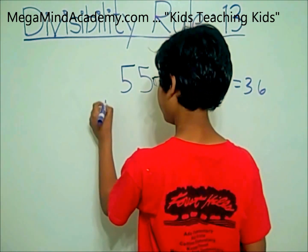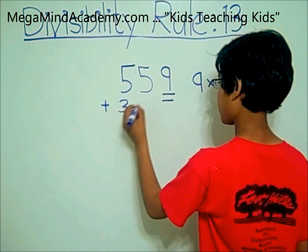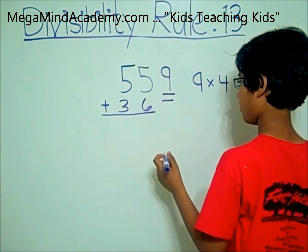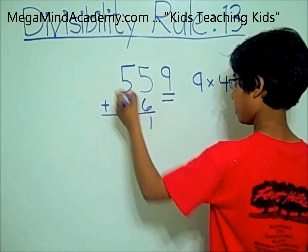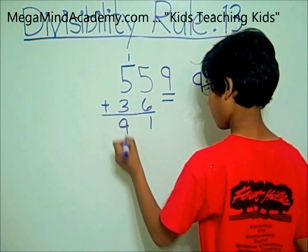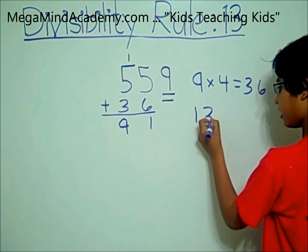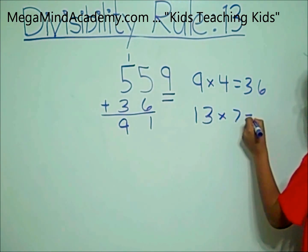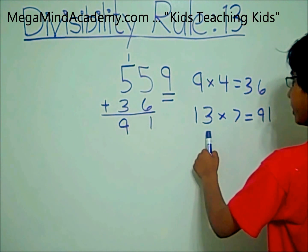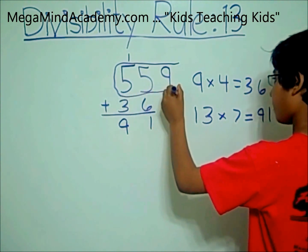Now you add 36 to 55. 55 plus 36 equals 91. And 13 times 7 equals 91, so that means 91 is divisible by 13. So that means 559 is divisible by 13.